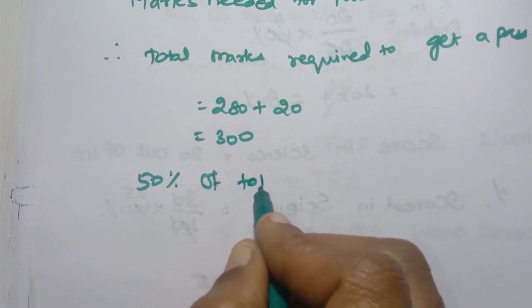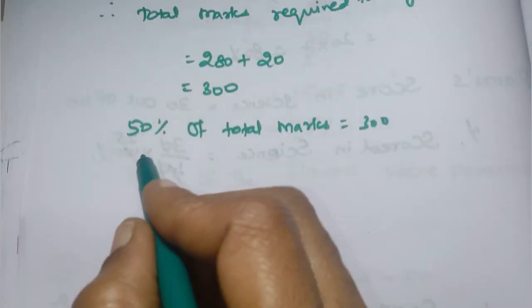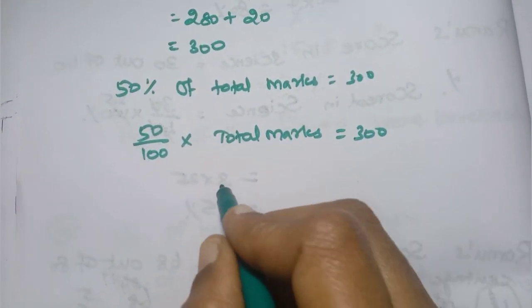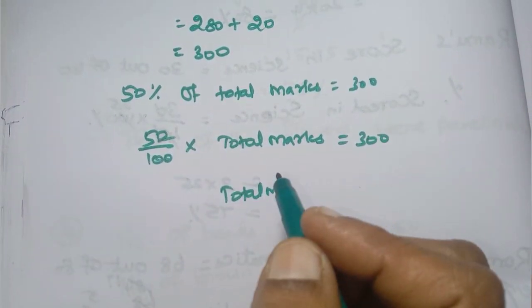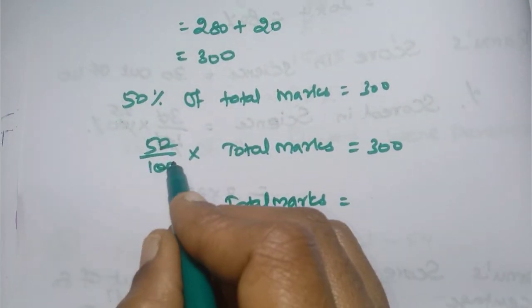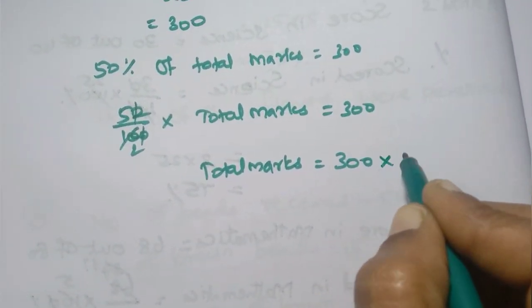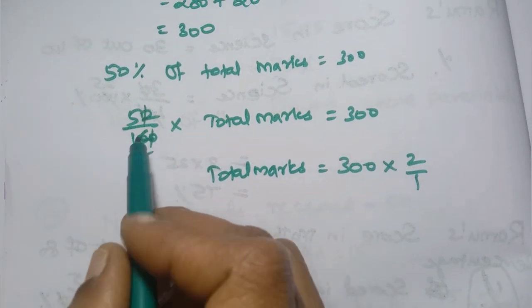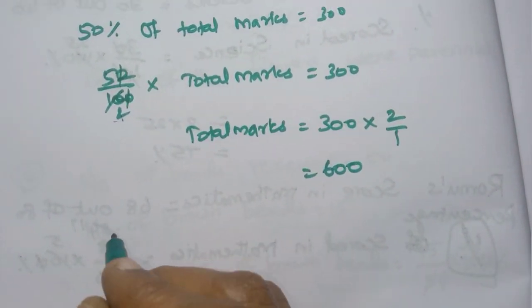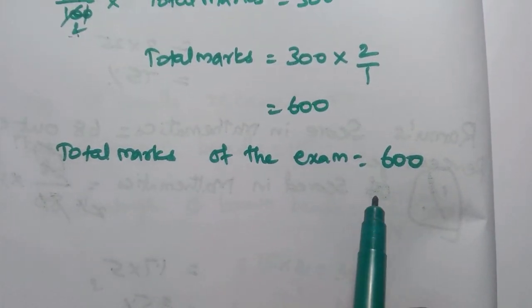50% of total marks equals 300. So 50 by 100 into total marks equals 300. Solving: total marks equals 300 into 100 divided by 50, which is 300 into 2 equals 600. Total marks of the exam equals 600.